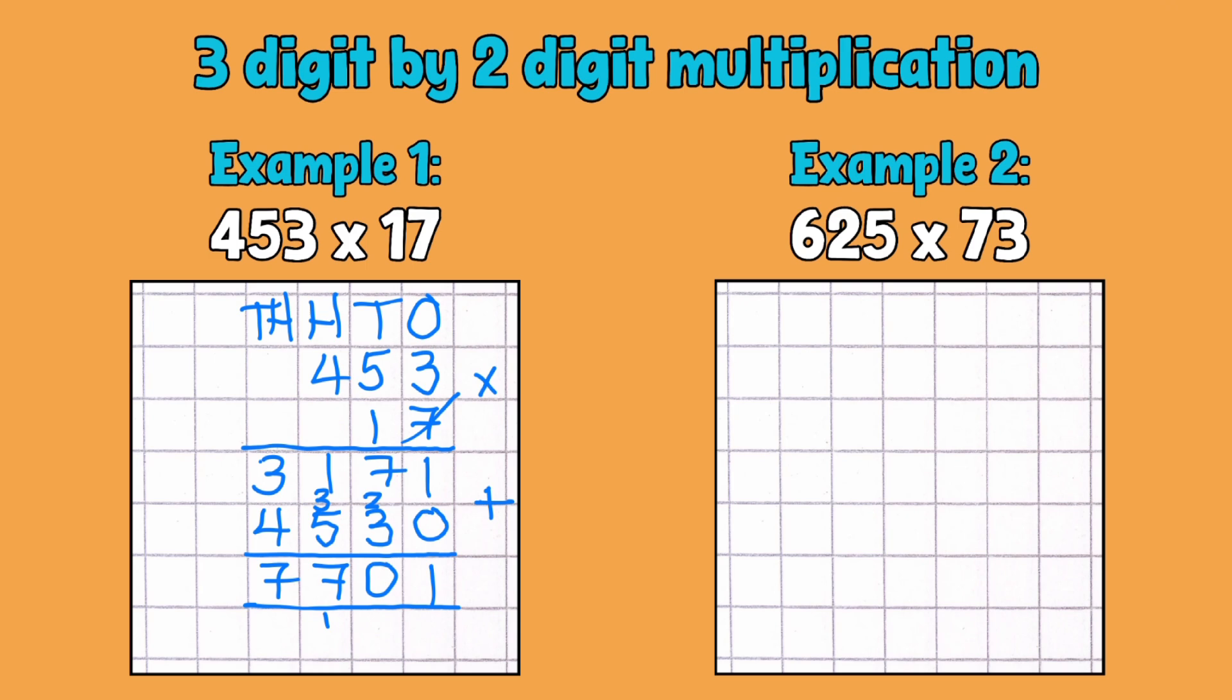Let's get cracking with example number 2. So I have 625 multiplied by 73. And I'm going to do exactly the same thing that I've done with my other example. So I'm going to write in my place value headings just to make it nice and easy for myself. But this one does involve some slightly larger numbers. So I'm going to put an extra column in there. I may even need another one, but let's find out. So we've got 625 multiplied by 73.